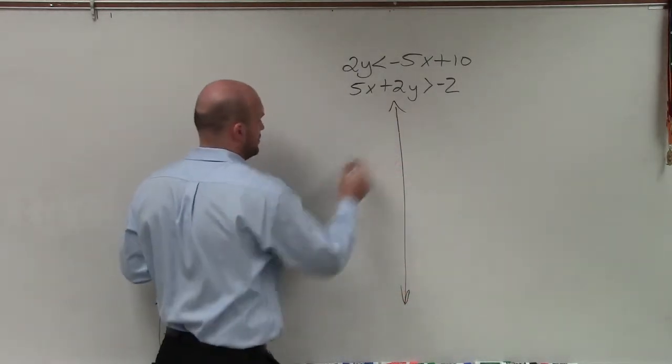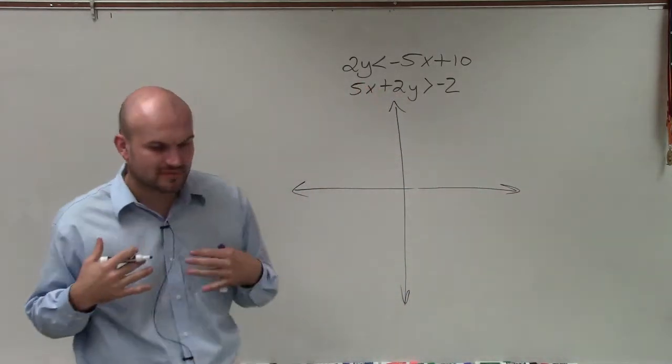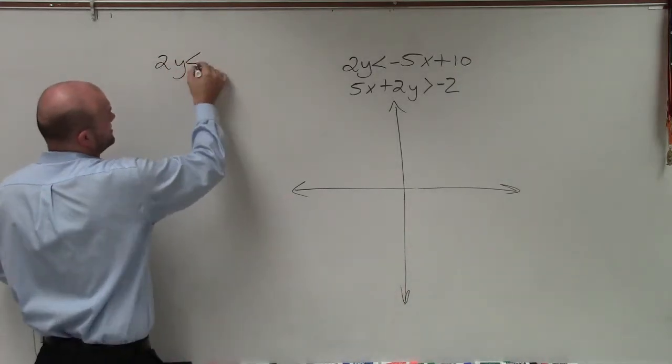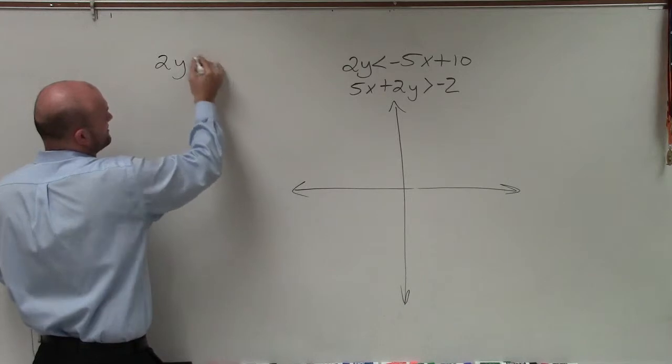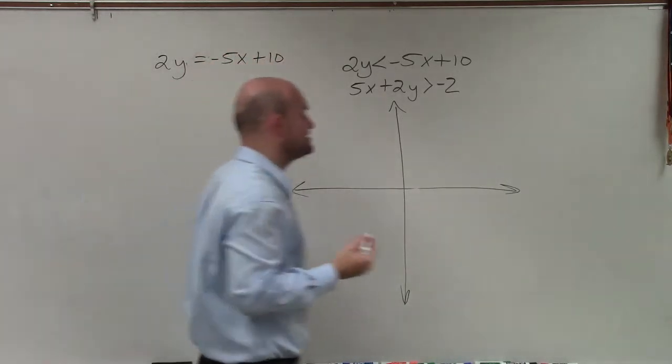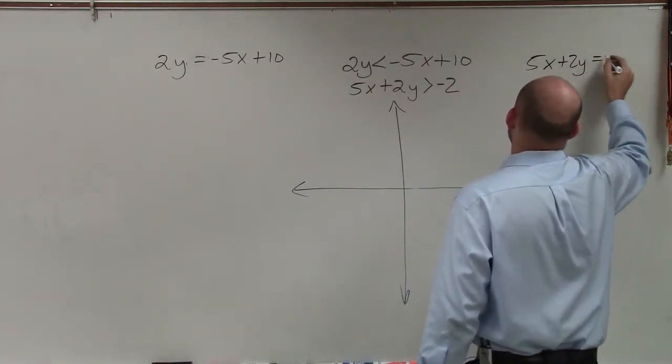And the easiest way to graph inequalities is just to graph your boundary line in the same manner, in fact, that you graph linear equations. So I'm just going to rewrite both of these inequalities to the left and to the right as equations. Because basically what we're looking for is what is going to be the shape of our line as an equation.